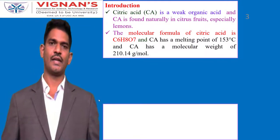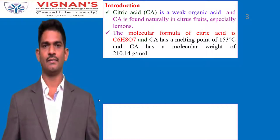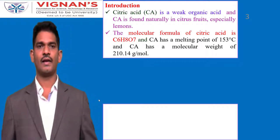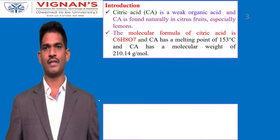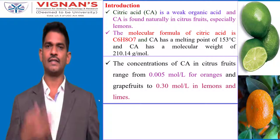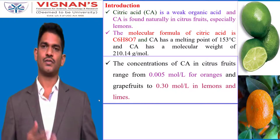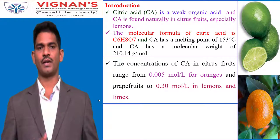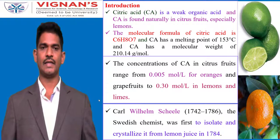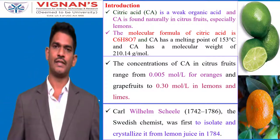Citric acid is a weak organic acid found naturally in citrus fruits, especially in lemon. The molecular formula of citric acid is C6H8O7 and it has a melting point of 153 degrees Celsius. The concentration of citric acid in citrus fruits ranges from 0.005 mol per litre in oranges to 0.30 mol per litre in lemon. Citric acid was first isolated by a Swedish chemist from lemon juice in 1784.